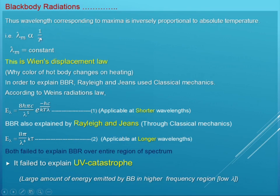Wien's Displacement Law mathematically proposes that the maximum wavelength is inversely proportional to absolute temperature. This explains why the color of a hard body changes on heating — if you take a metal stick or iron stick and heat it from low to high temperature, you will find there is a change in the color. Why is there a change in the color?